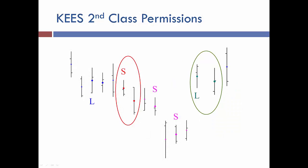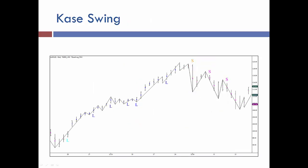You will also notice that the size of the dot on the bar varies. This takes place due to the check that KEYS does to make sure the bar is closing in the direction of the signal. When a bar closes down on a short permission bar, the dot will be bigger. However, when the bar closes up on a short permission bar, the dot is smaller. The bars that have larger dots are qualified to be entry bars, and you'll notice that the L's and S's are only drawn on bars with the larger dots.